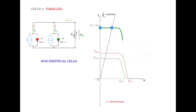Now let us introduce some finite resistance. The load line has a finite resistance value and therefore a finite slope. We have the corresponding currents at this operating point I1 plus I2 as the current value, and Vt the voltage value occurring across the parallel cell combination.